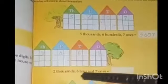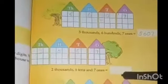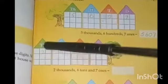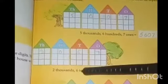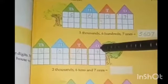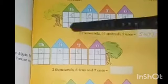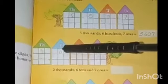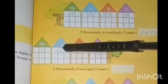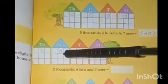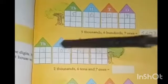House number 2: two thousand, six tens, and seven ones. So write 2 into the thousands place, 6 into the tens place, and 7 into the ones place. But what about the hundreds house? There will be no digit in it. There will be zero, so we will write 2067.